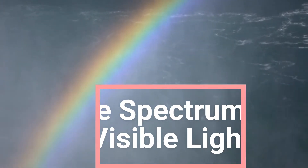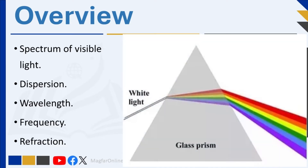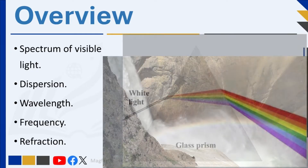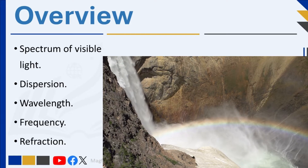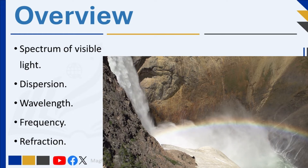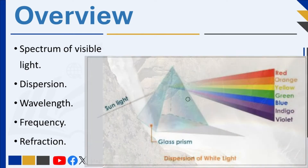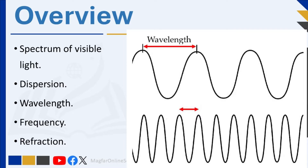Welcome to the spectacular world of visible light. Today we will explore how white light transforms into a mesmerizing array of colors, from vibrant violet to radiant red. Have you ever wondered why a rainbow explodes with so many vibrant colors? We'll reveal how white light, seemingly pure and simple, is actually a dazzling combination of colors waiting to be unraveled, as we explore the mysteries of frequency and wavelength.